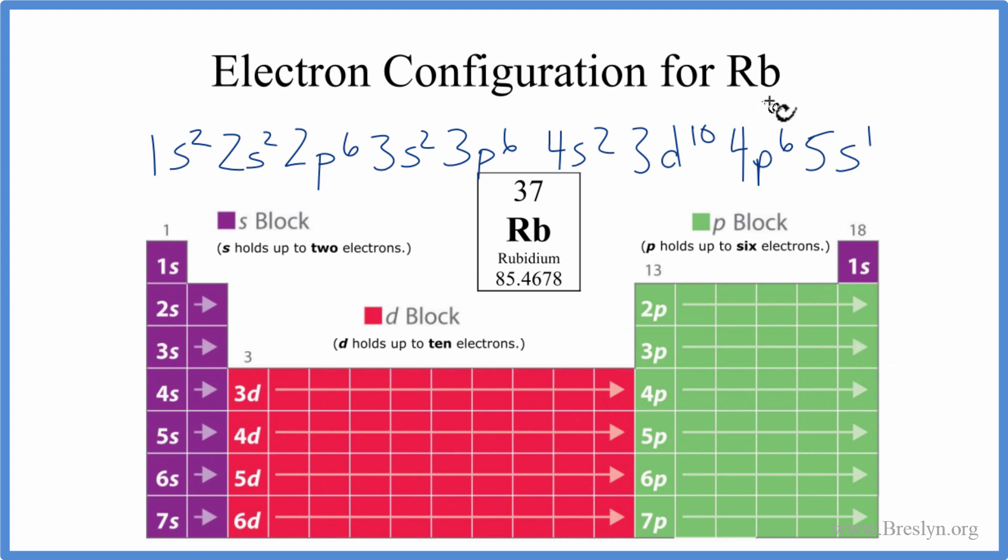And that's the electron configuration for rubidium. This 5 here, that means this is the highest energy level. And because of that, we can see that rubidium only has one valence electron, like all the other elements in this group 1 here.